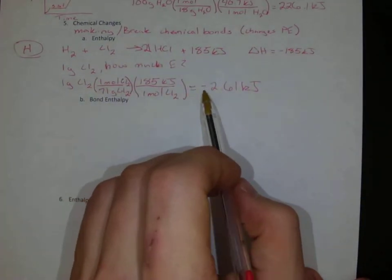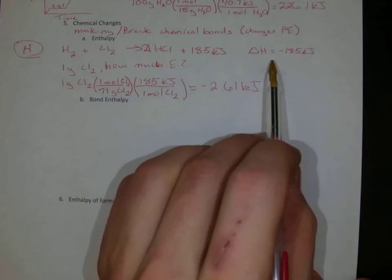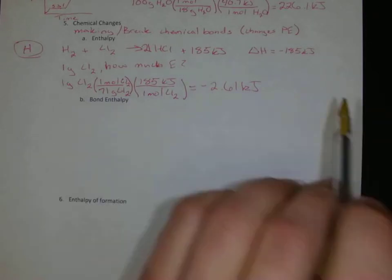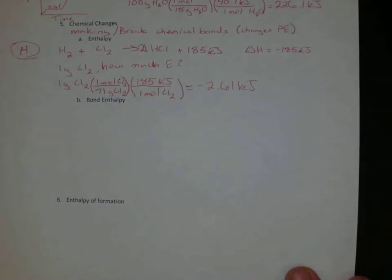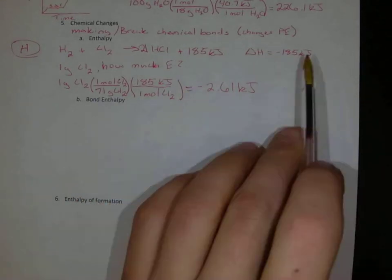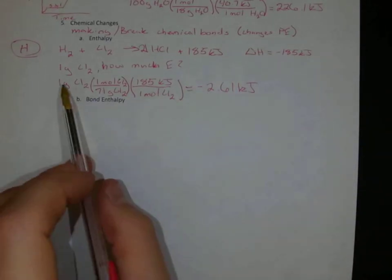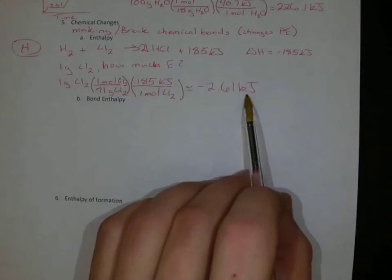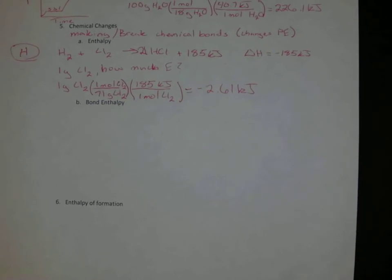Yes, it is negative now because I have it on the right-hand side. It is producing 185 kilojoules. So negative 185 kilojoules, we're going to get negative 2.61 kilojoules out the end here.